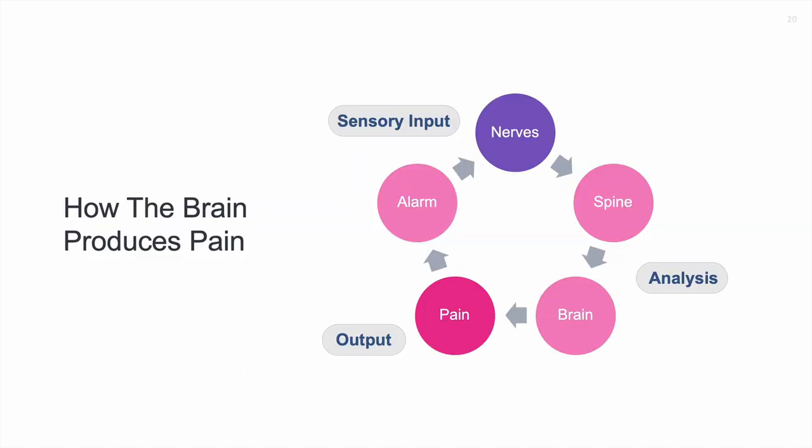Here are the parts of the model: sensory input from peripheral nerves throughout the body; analysis occurring in the spine and brain — the central nervous system; then output, which could be pain or other things. Then another alarm system gets activated, which impacts the nerves, and this becomes a cycle with a life of its own. Once it has a life of its own, it really doesn't need any sensory input anymore — and a person ends up with chronic pain. We need to know how to break this cycle.